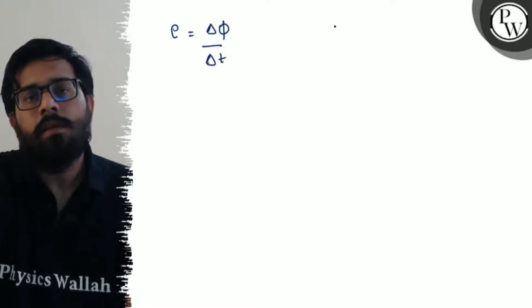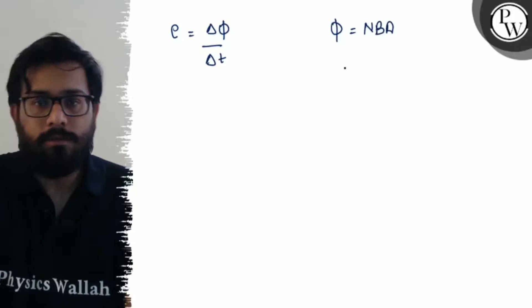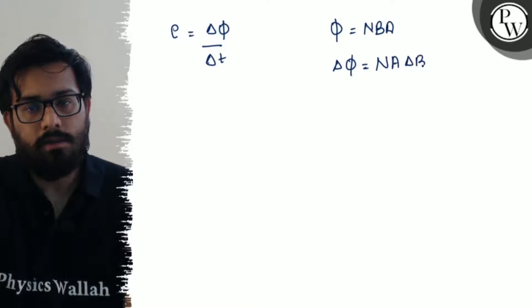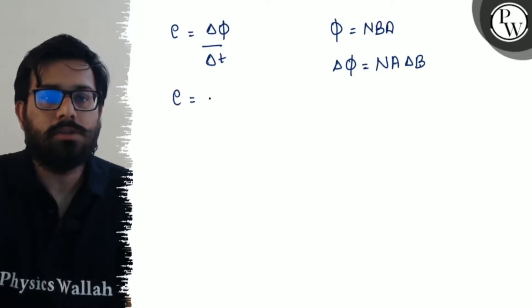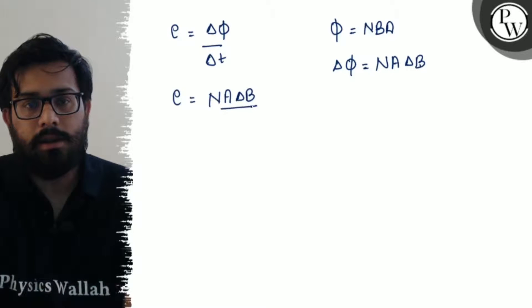We know that phi equals NBA. So delta phi is, number of turns remains constant, area remains constant, delta B. Just put the values: equals N A delta B by delta T.